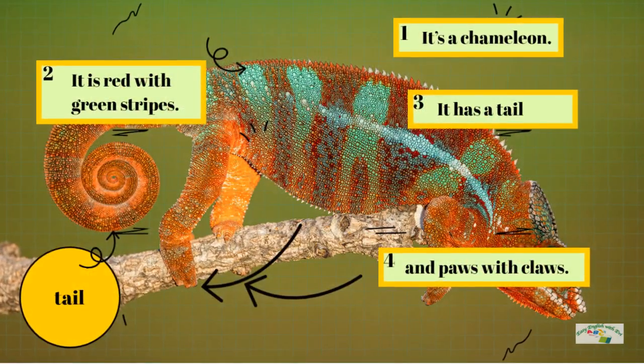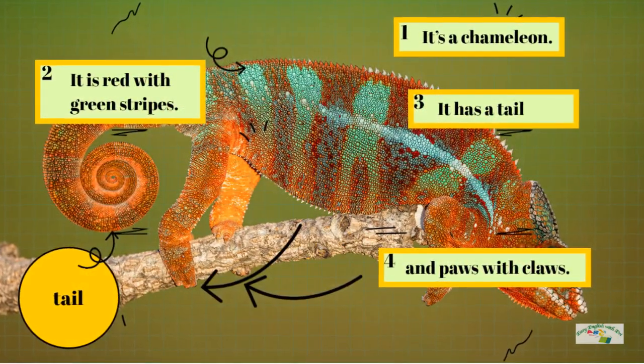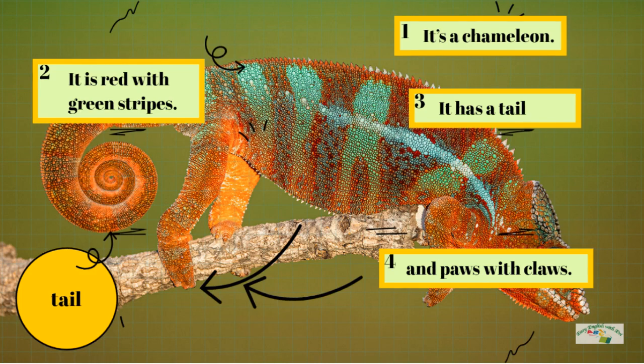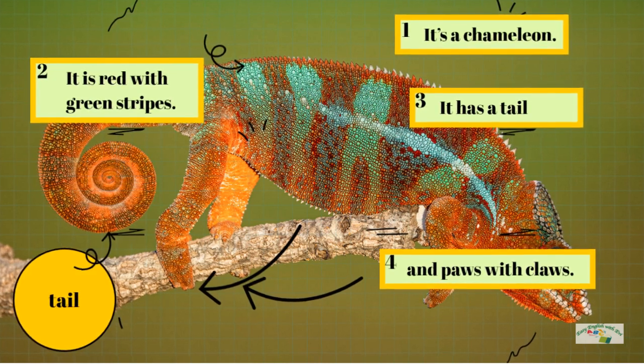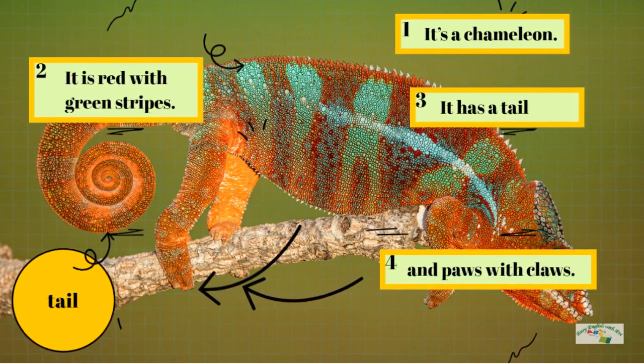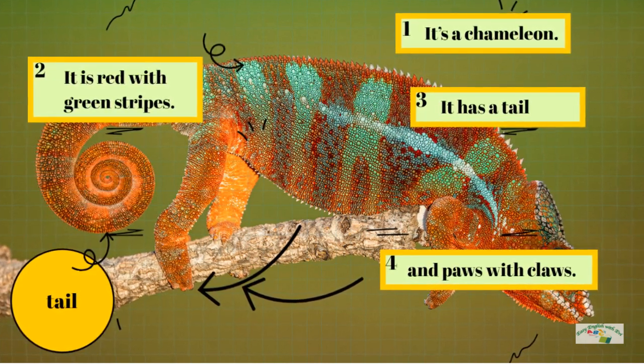It's a chameleon. It is red with green stripes. It has a tail and paws with claws.